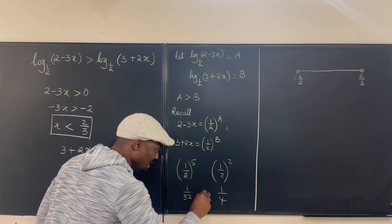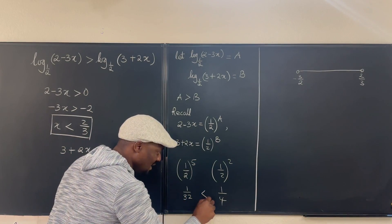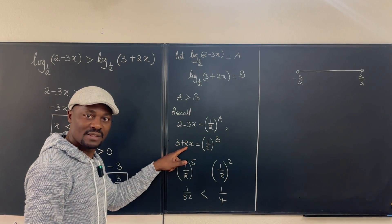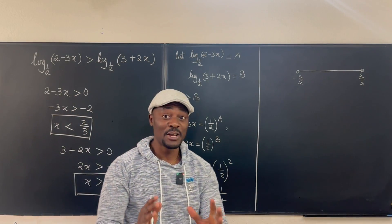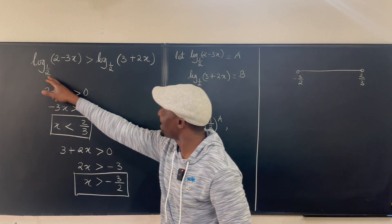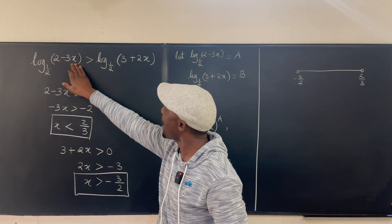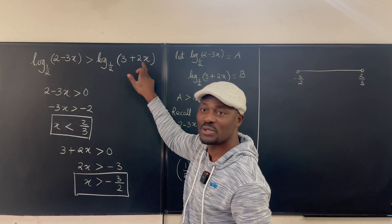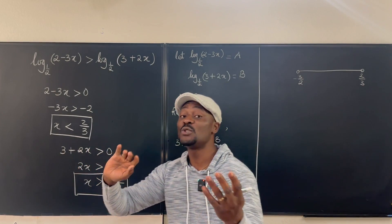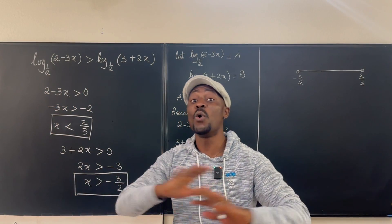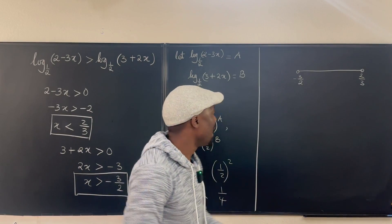You see that? So this is 1 over 32 is less, so this is less than this. So you would be making a huge mistake if because they have the same base, you went ahead and said 2 minus 3x has to be greater than 3 plus 2x. You can't do that. You have to do the opposite because these are fractions. That was, that's the whole idea of this video. Okay. Let's finish this.